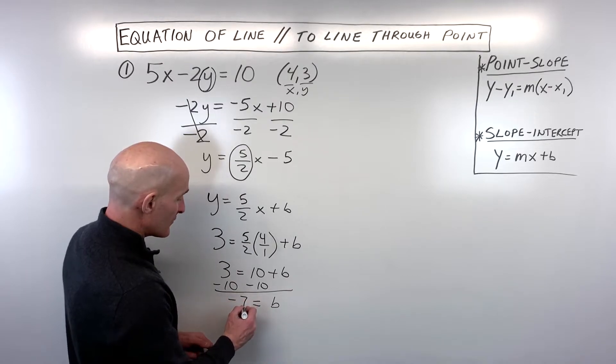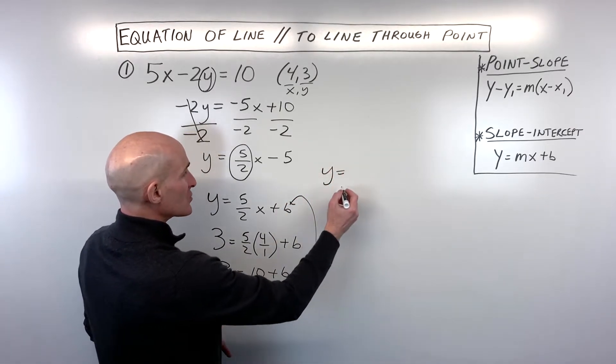We're going to subtract 10 from both sides to get b by itself. And so you can see that b is coming out to negative 7. So what we're going to do is we're going to take this negative 7, we're going to put it in place of b right here, and that's going to be our equation. So y equals 5 halves x minus 7. And you got it.